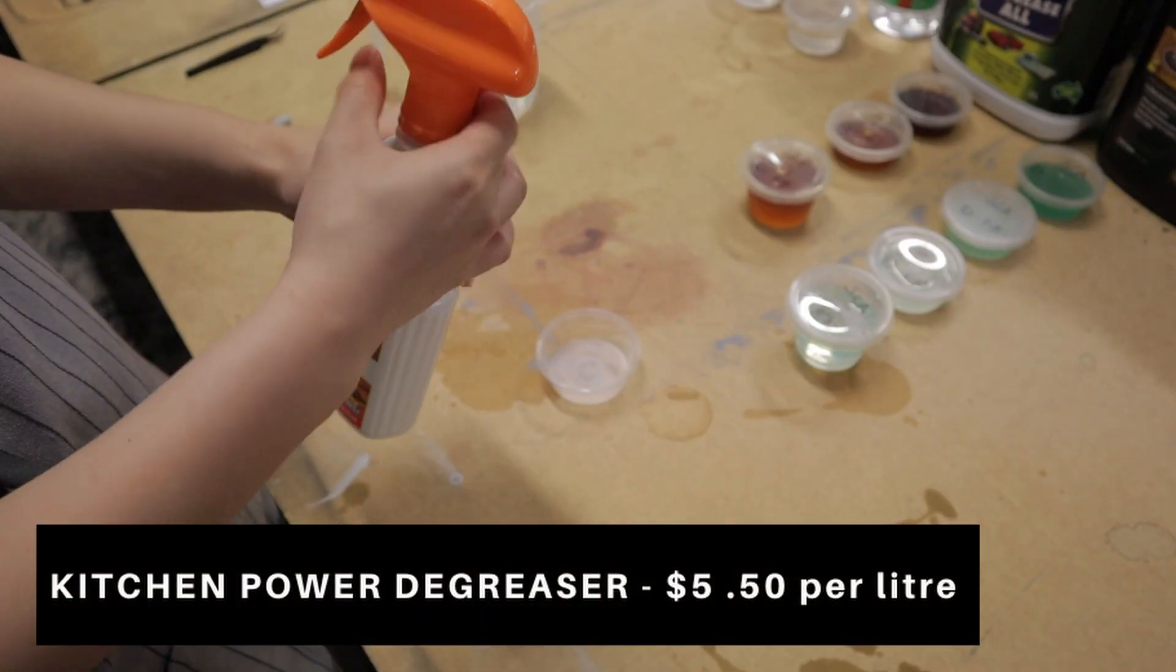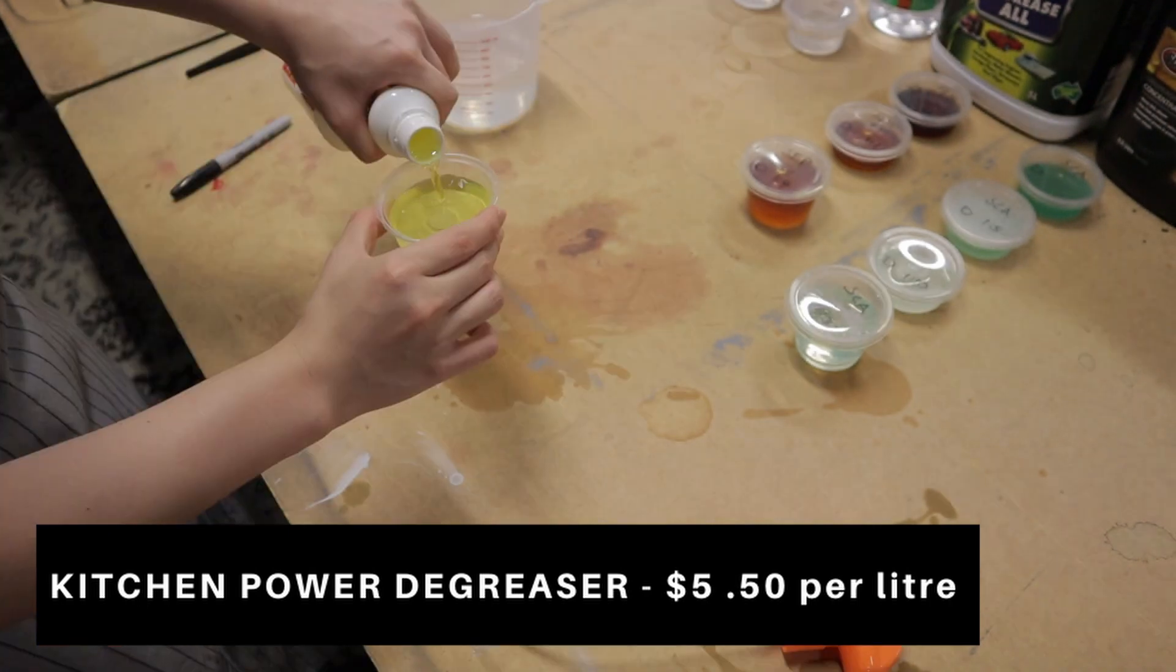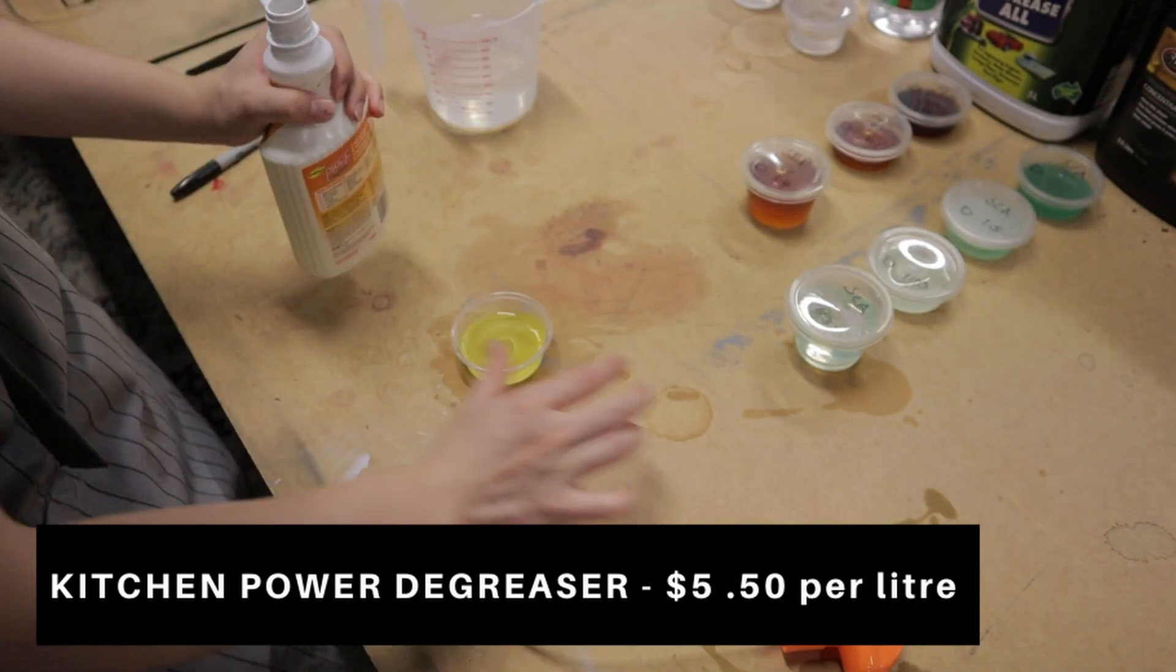Finally, I'm going to try OzClean Kitchen Power Degreaser. And this comes in at $5.50 a liter.